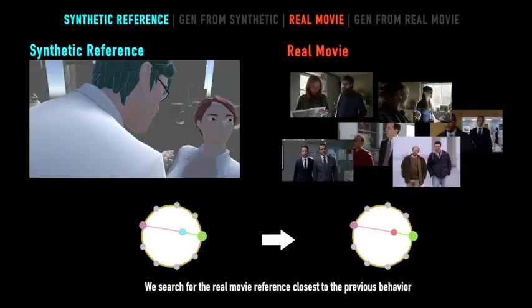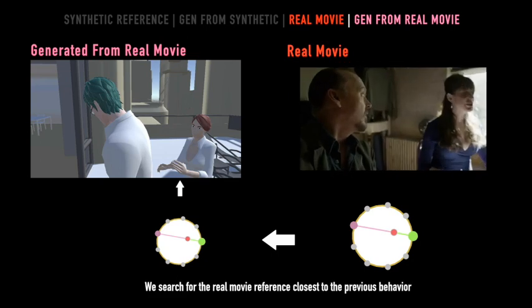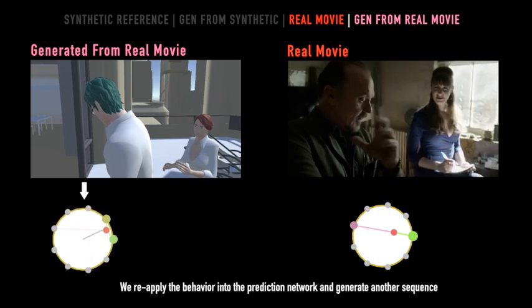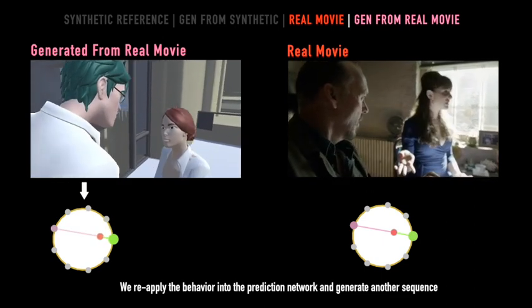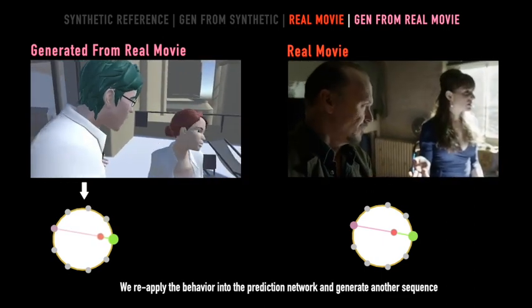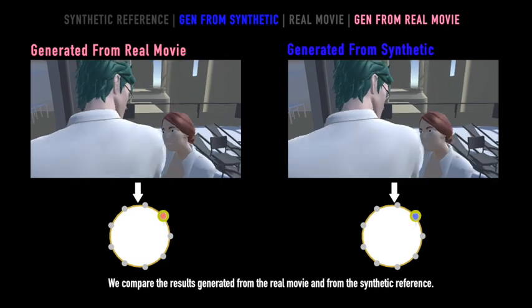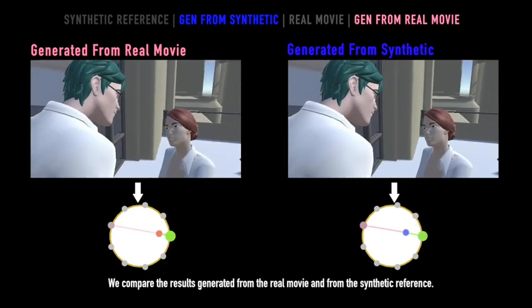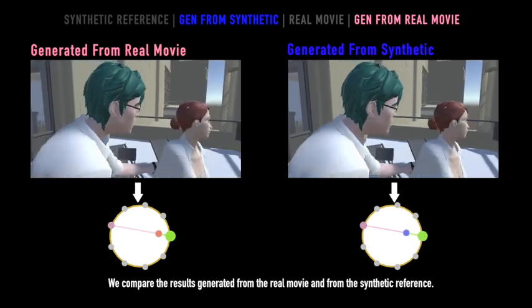In the second stage of validation, we use the same extracted behavior to select, among all real movie clips from the test data, the one which is closest in the camera behavior space. We then use the selected clip and apply its behavior to the same 3D animation. As displayed, the clock representations of the camera behavior space appear similar. Finally, we compare the sequences generated from the real and the synthetic movies. The similarity in behaviors demonstrates the capacity of our system to both estimate behaviors from clips and generate camera motions that enforce the selected behaviors.